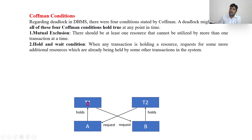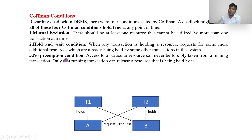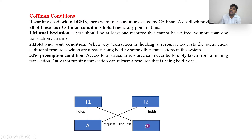The second condition is Hold and Wait — transactions are holding resources and waiting for others without releasing what they hold. The third condition is No Preemption — for example, T1 is requesting a lock on B held by T2, but it cannot forcefully take it. T1 must wait until T2 voluntarily releases the lock on B.